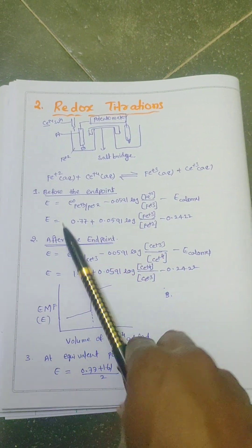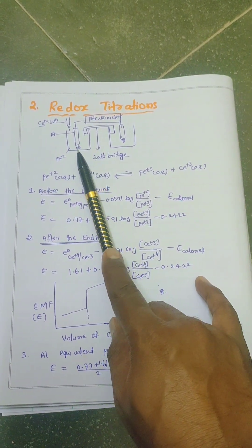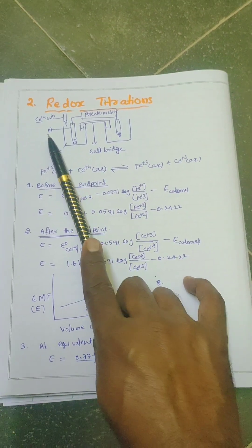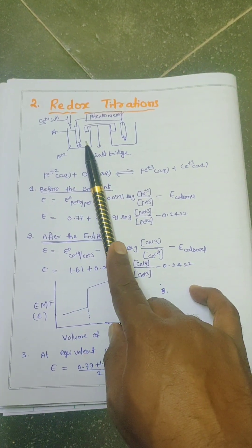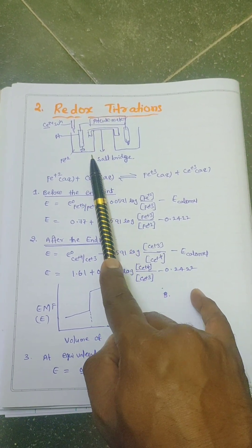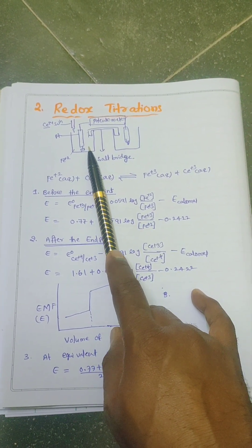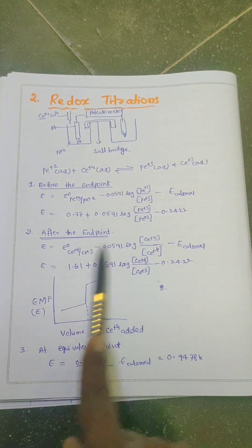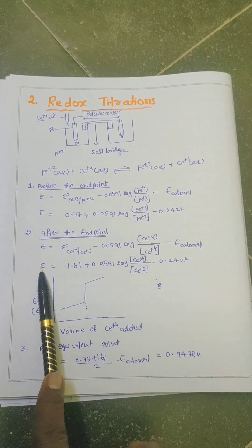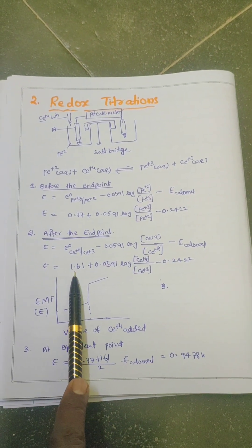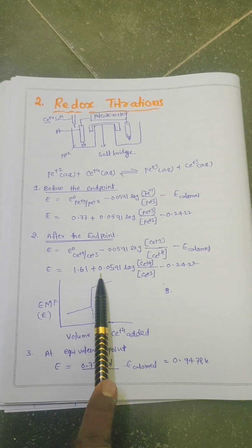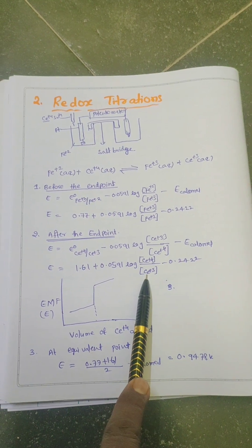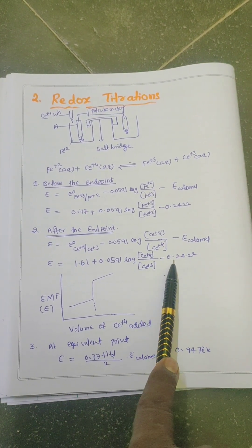After the end point, all ferrous ions are converted into ferric ions. In the solution we have only ceric ions remaining. After the end point, the equation to calculate the EMF of the cell is: E = 1.61 + 0.0591 × log([Ce⁴⁺]/[Ce³⁺]) − 0.2422.